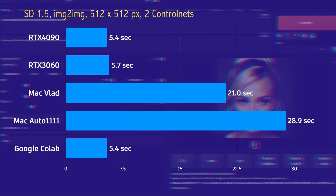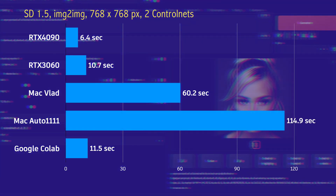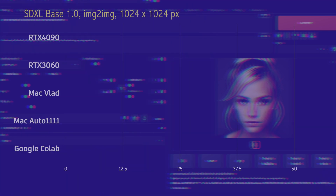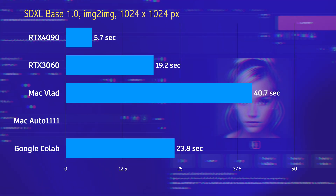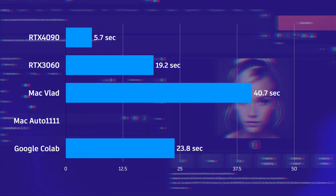With image-to-image and two ControlNets, we get a similar picture. The RTX 3060 and Google Colab are performing quite well at lower resolutions, while the RTX 4090 doesn't seem to have any issues even with high resolutions — probably because it has 24 GB of VRAM and I also have 64 GB of RAM in my machine. The Mac is doing okay with lower resolutions but struggles quite a bit with high resolutions, especially using Automatic1111.